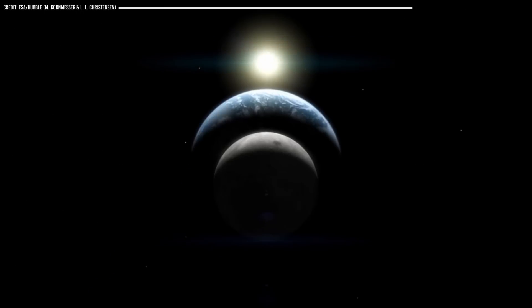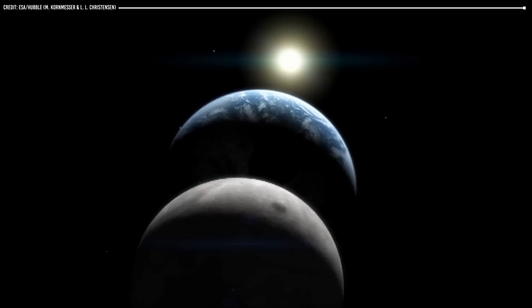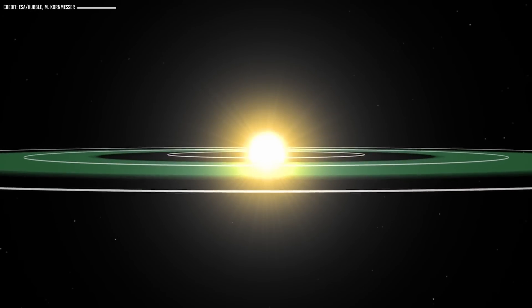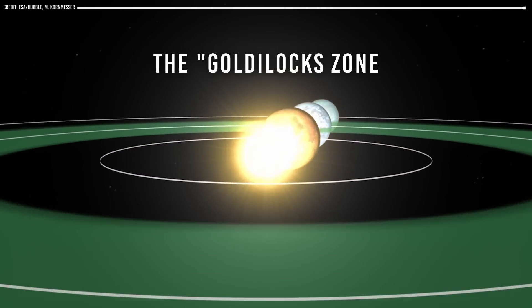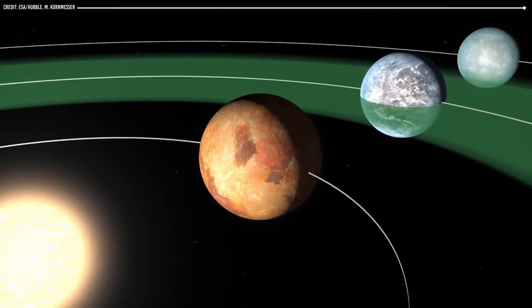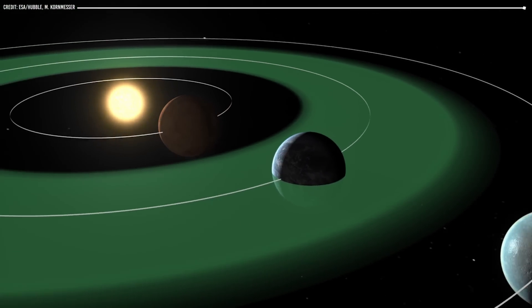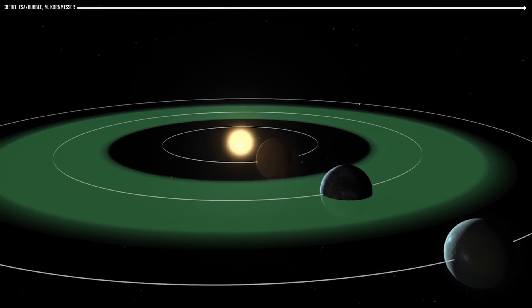One of the primary factors that have contributed to Earth's ability to support life is its distance from the sun. Earth is located in the Goldilocks zone of our solar system, which is the range of distances from the sun that are just right for the planet to support liquid water, a key ingredient for life as we know it.